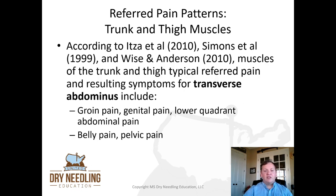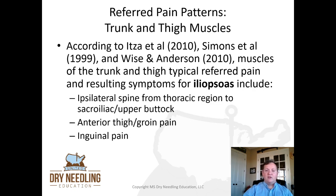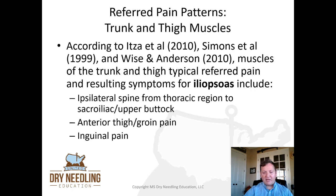For the transverse abdominis: groin pain, genital pain, lower quadrant abdominal pain, belly pain, and pelvic pain. For the iliopsoas: ipsilateral spine from the thoracic region to the sacroiliac and upper buttock, anterior thigh and groin pain, and inguinal pain is also implicated in the iliopsoas pain referral.